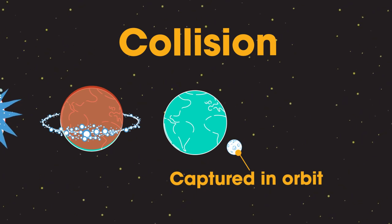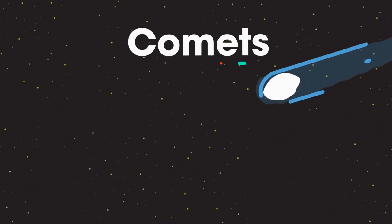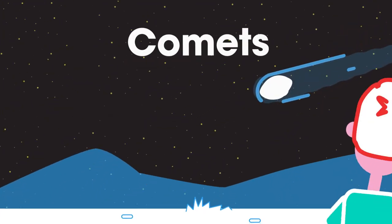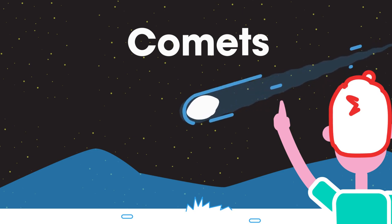There are other objects that are part of our solar system we rarely see. Comets. People once thought the appearance of a comet in the night sky was a warning of a tragic event about to happen.